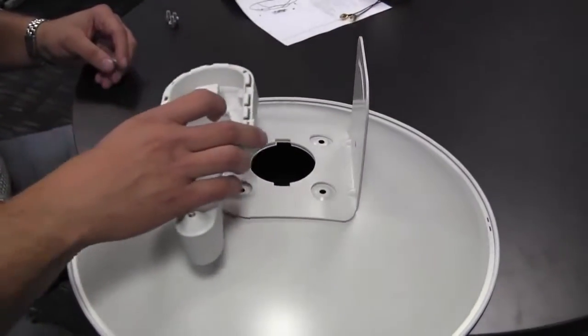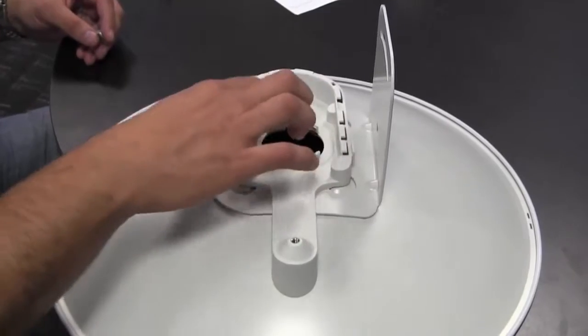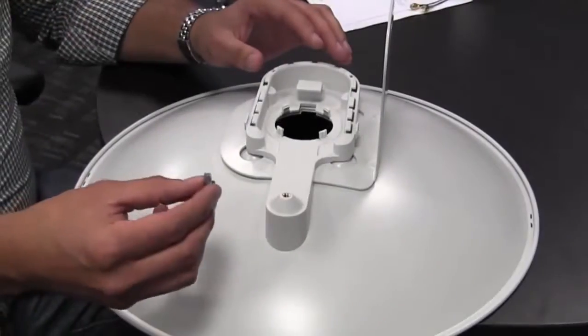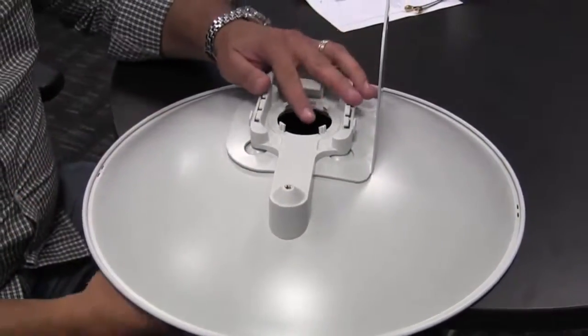Place the bottom housing onto the mounting bracket, noting the notch there. Use the four screws provided to attach the bottom housing to the mounting bracket.